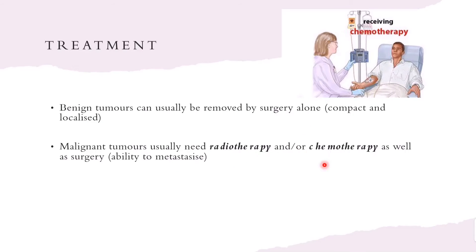Radiotherapy and chemotherapy are ways of killing rapidly dividing cells, using drugs or radiation to target tumor cells. Because malignant tumor cells divide rapidly, these drugs or radiation target them. However, some healthy human cells also divide rapidly — for example, hair-producing cells — so chemotherapy or radiotherapy can also cause side effects such as hair loss.